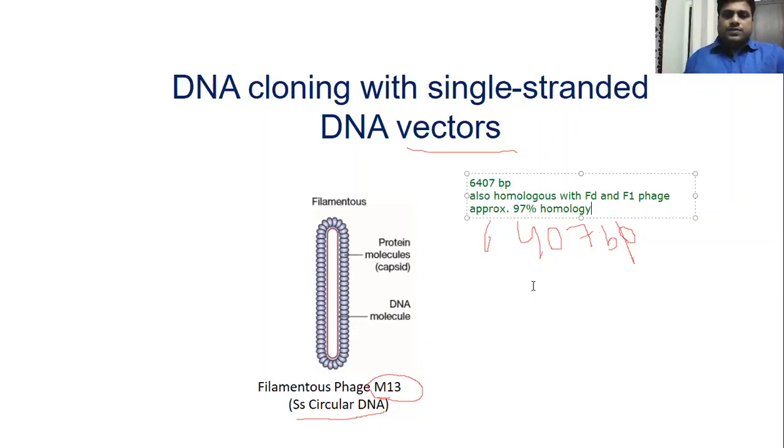Unlike lambda phage which is double-stranded linear DNA, there was a problem with insert gene size, but here there is no problem. This is less than lambda phage which is 48.5 kilobases. So this follows the rule that the phage or vector should be low in size or low in molecular weight.